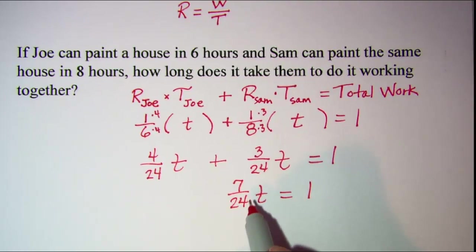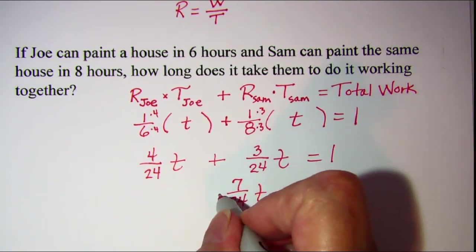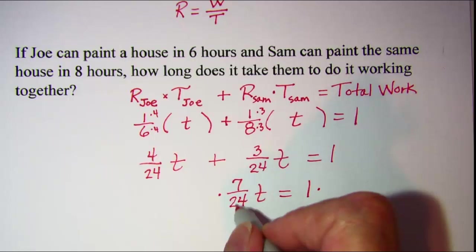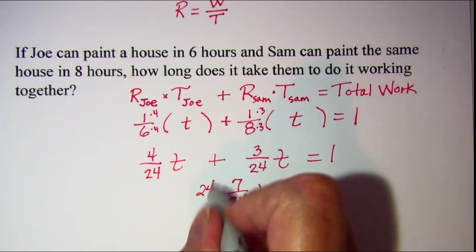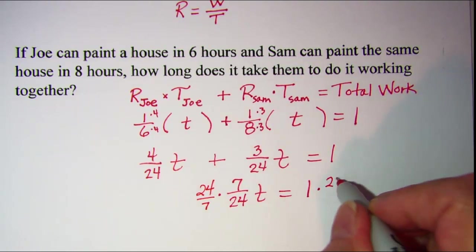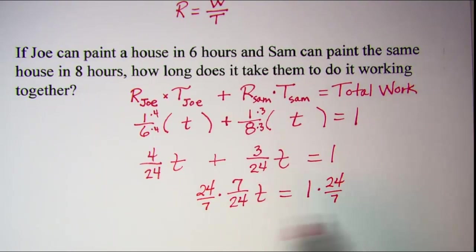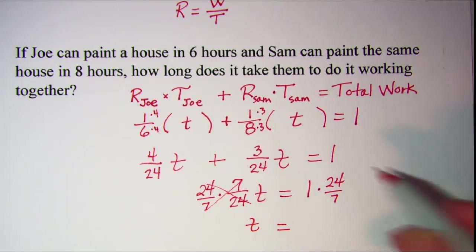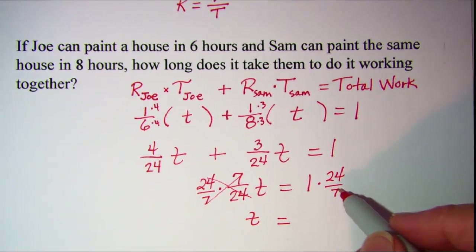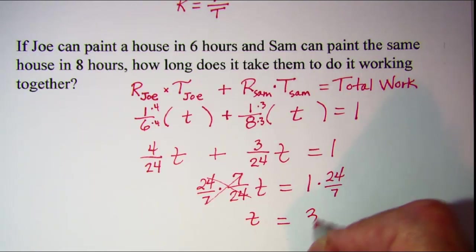Now we'd like t by itself. So we'll multiply both sides by the reciprocal of this fraction. The reciprocal will be twenty-four over seven, and we need both sides. So on this side twenty-four sevenths times seven twenty-fourths, that's just one. So I have t equals, and then one times twenty-four sevenths is twenty-four sevenths, which is also three and three-sevenths hours.